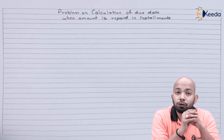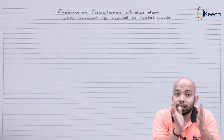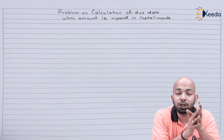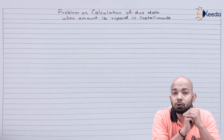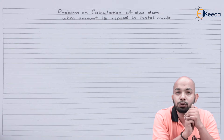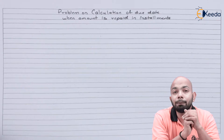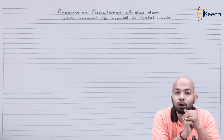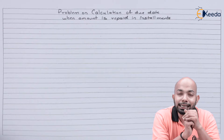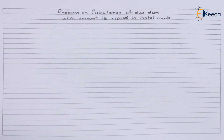To demonstrate this, we have an illustration for your reference that will be used for future references as well. Let's go to the illustration and figure out how to solve such problems when a case of repayment in installments is there for the calculation of average due date.